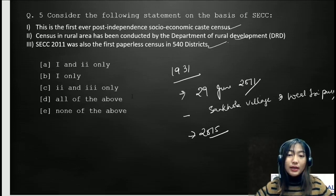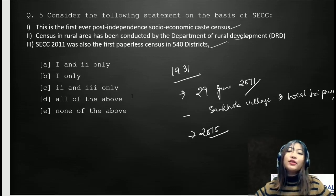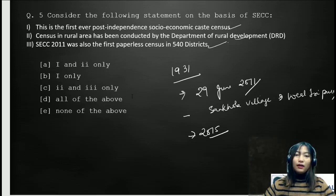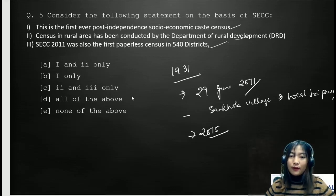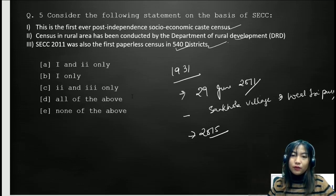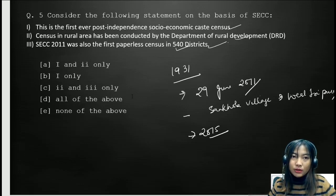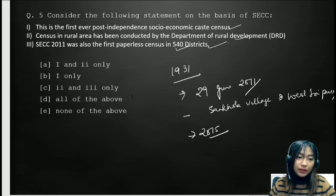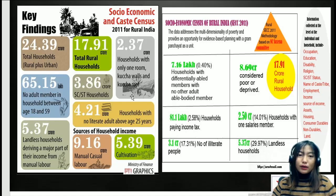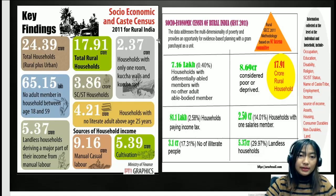The SECC was conducted in 640 districts — not 540 districts as stated in the question, making statement three incorrect. The main aim of the government in conducting the SECC was to evaluate the performance of past schemes and policies and update them accordingly. Here are some highlights of the SECC 2011.